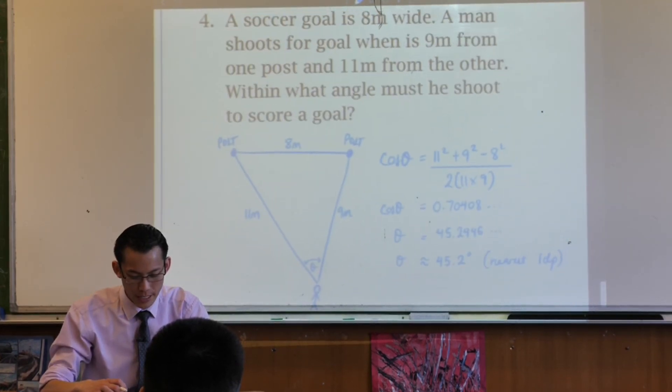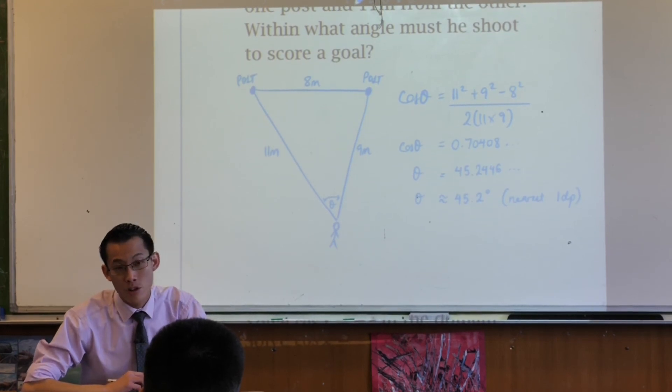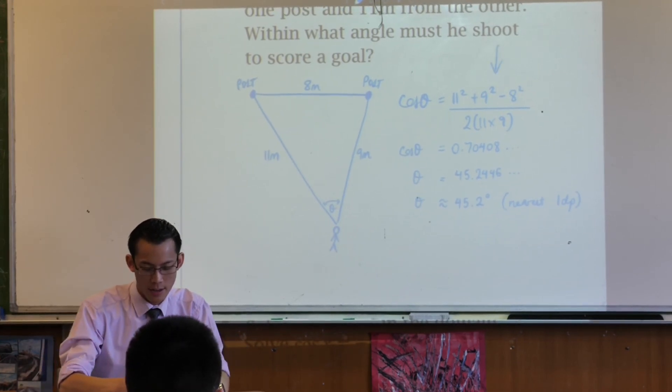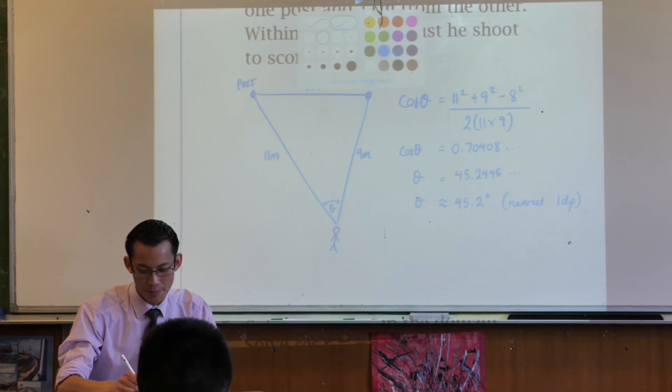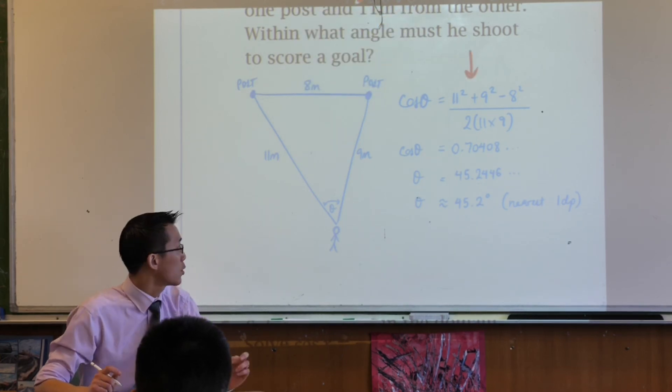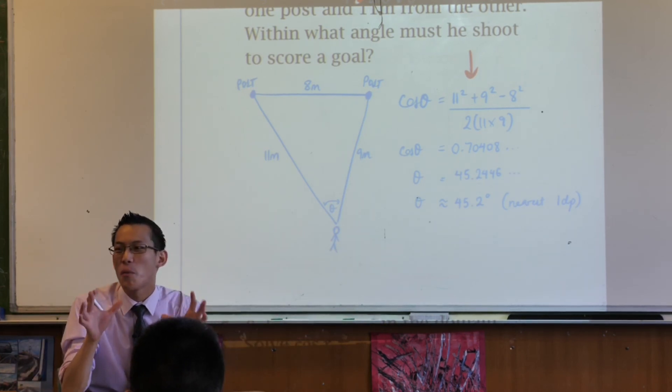Here's my use of the cosine rule. Now did you have to draw a diagram? No, you probably given the simplicity of the question could have worked it out and done all of this working on the right-hand side without the diagram there, but I don't see any reason why you wouldn't. Like, it took me all of five seconds to draw that, even with the stick figure, and I clearly know what I'm working out and that's very helpful.